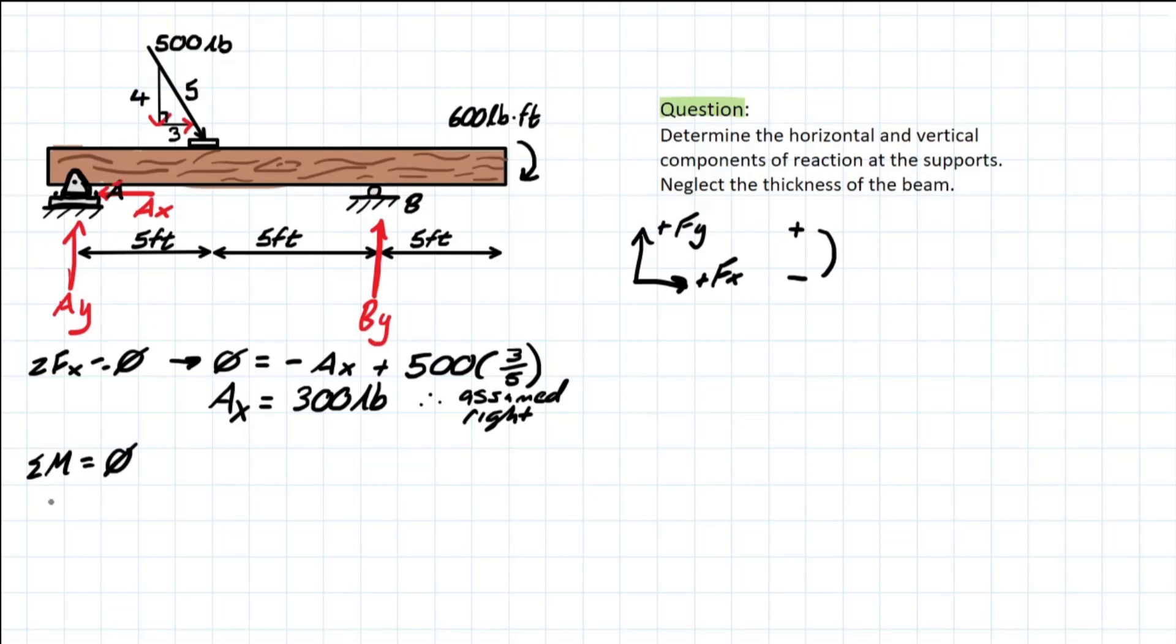Why? Because if we take the moment at A, we know that Ay is acting directly parallel to that point. It's acting right along the axis, so it's not going to create any rotation at the pin. So now we just need to consider the rules we have for a moment.